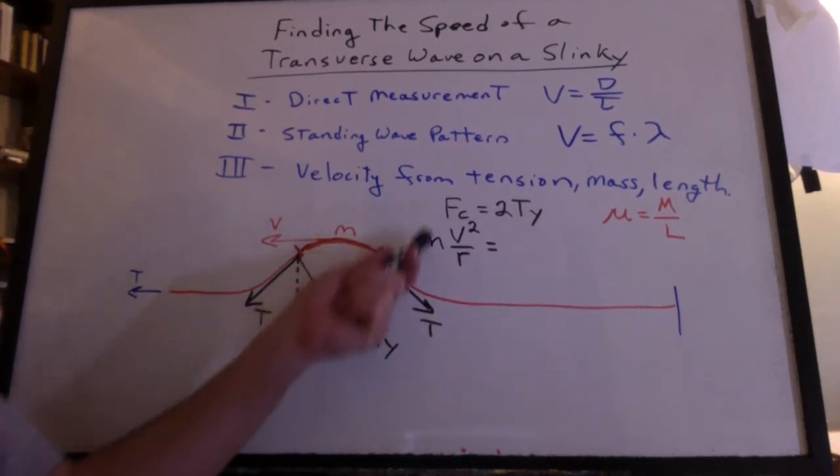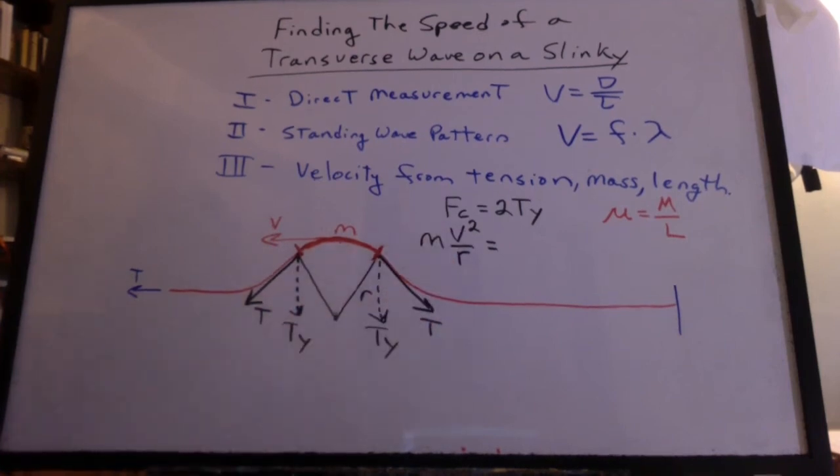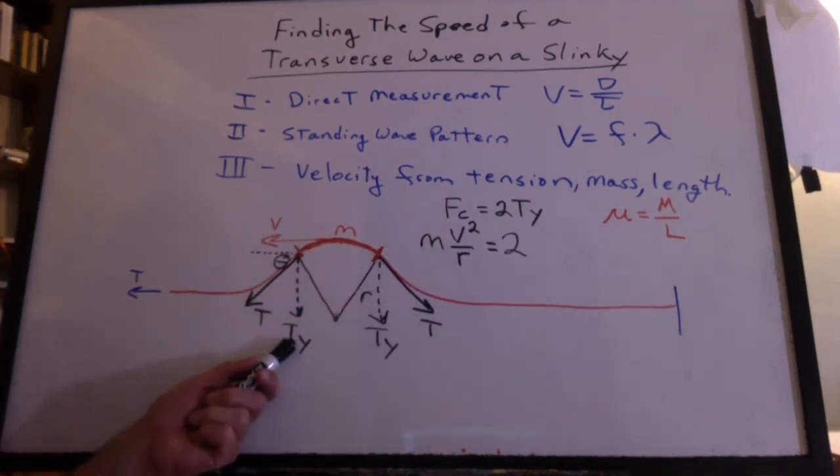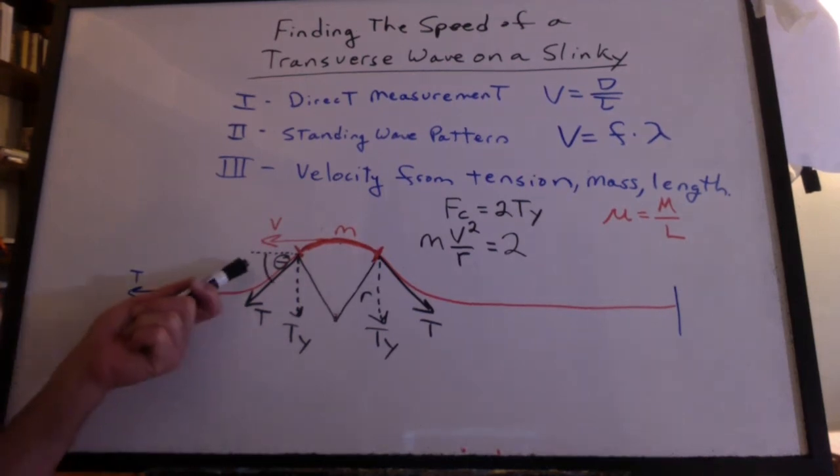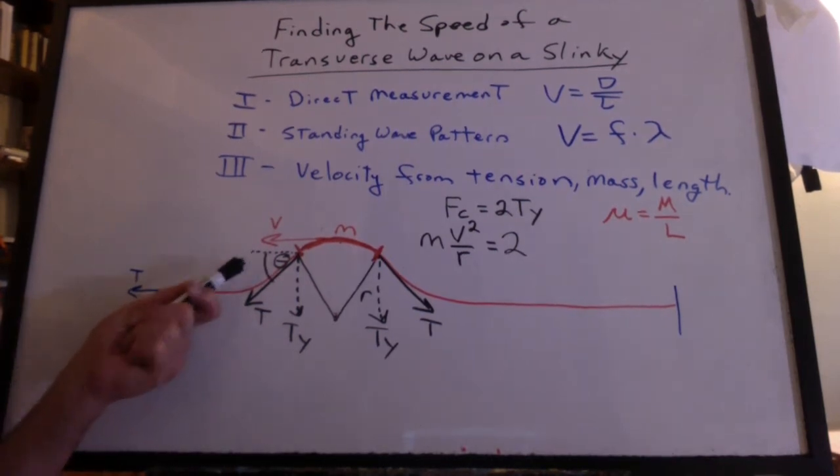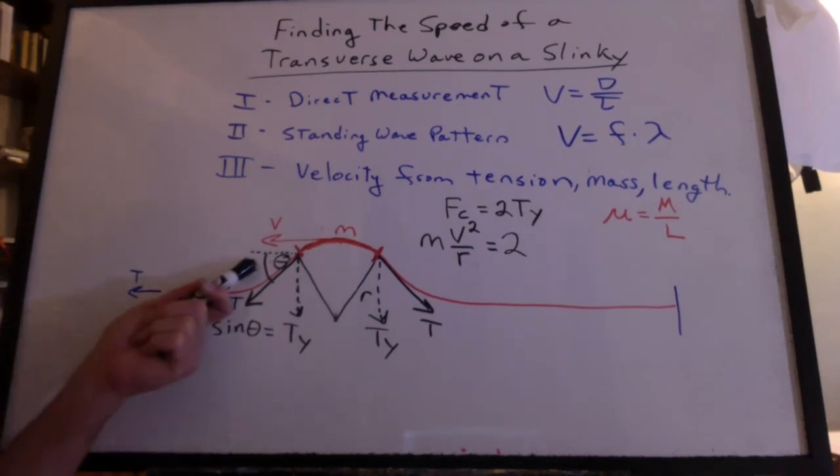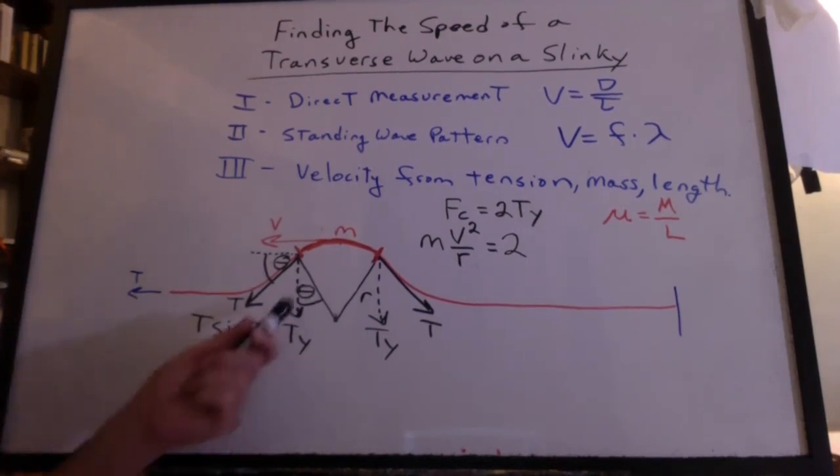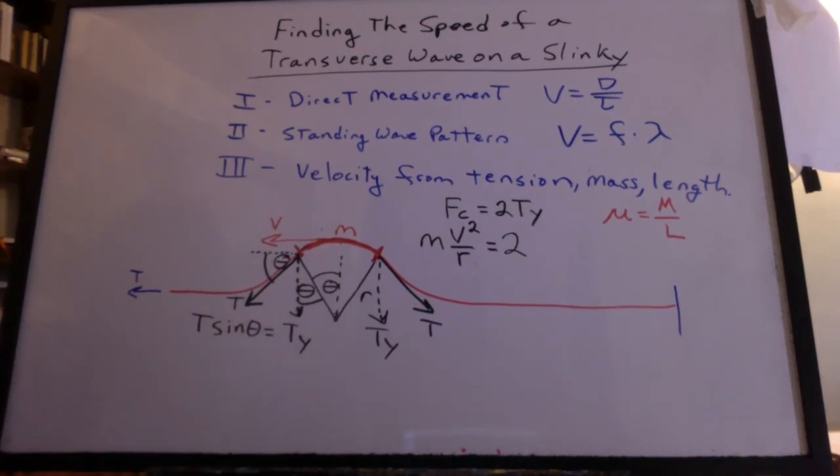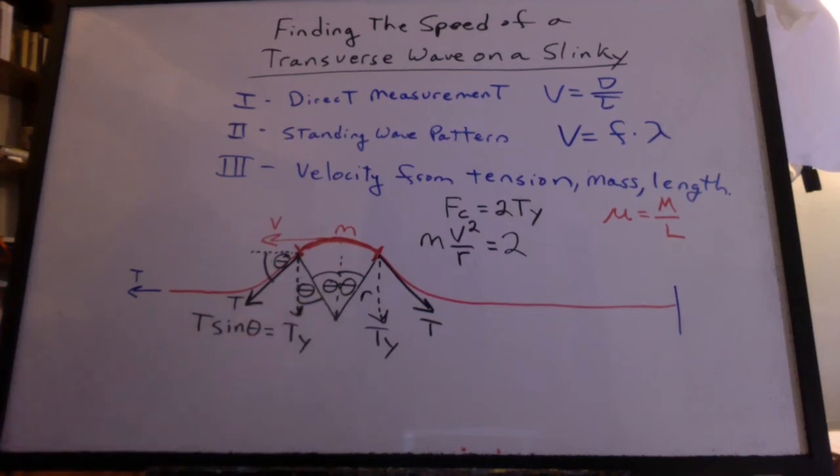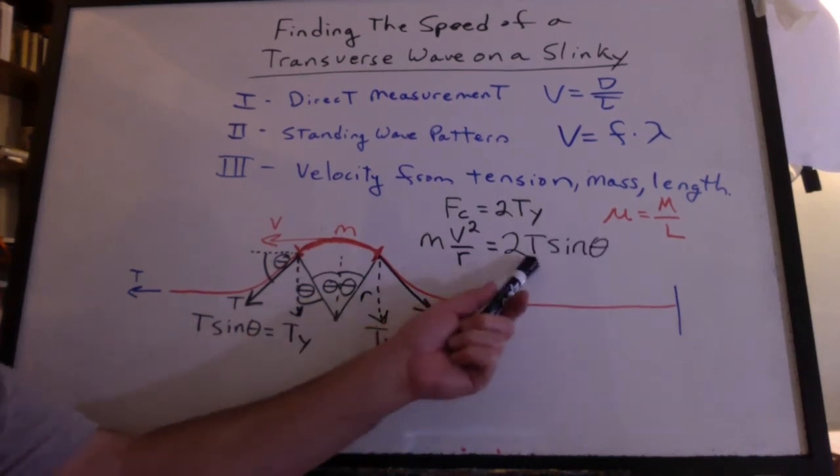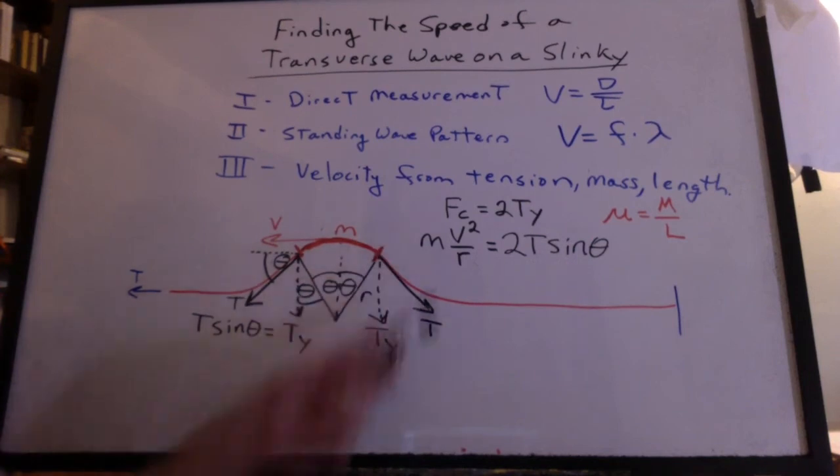We know that the FC has got to be MV squared over R, and TY can be found by taking the Y component of this tension, which means taking the sine of this angle. So where is that angle? It's the same as this angle, which is the same as that angle, and we have the same thing on the other side. So we have two T sine theta equals MV squared over R.